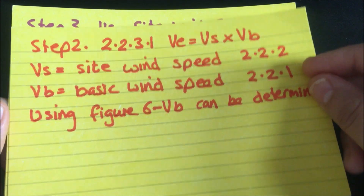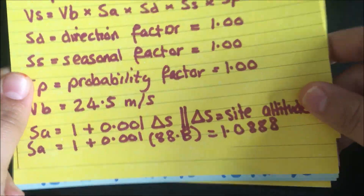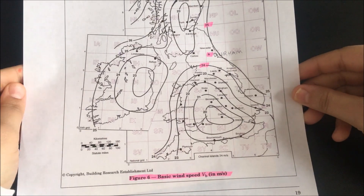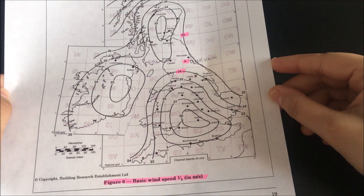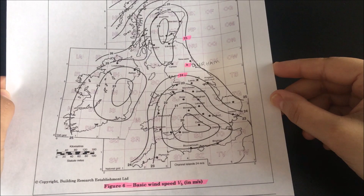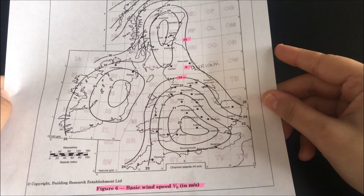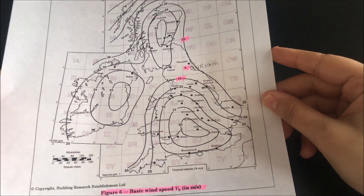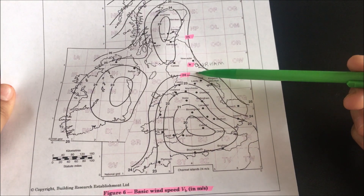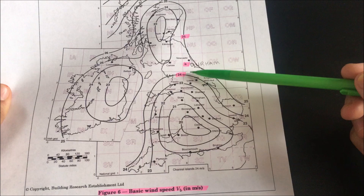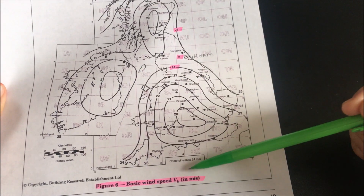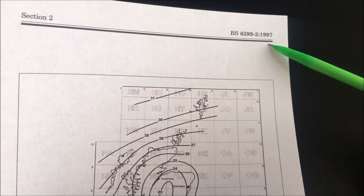Now, looking at section 2.2.1 for VB, the basic wind speed, you need to use figure 6 — a map of the UK. You find where your building is located; I've already pinpointed Durham on the map, and it's between the wind speed contours of 24 and 25. So I'm going to use a value of VB equals 24.5 meters per second, which is also from BS6399 part 2.